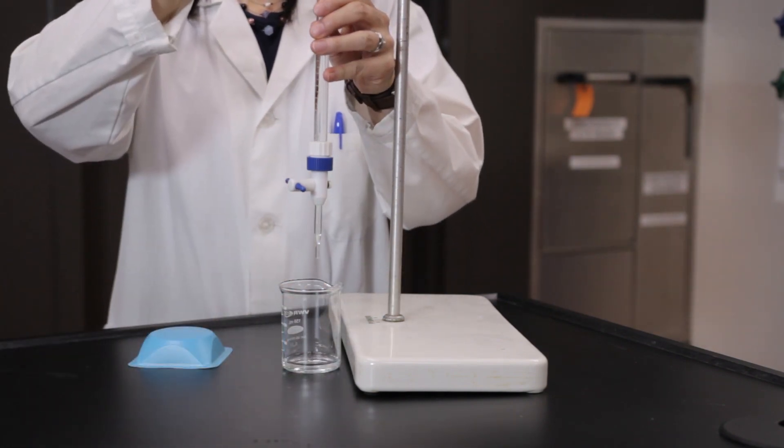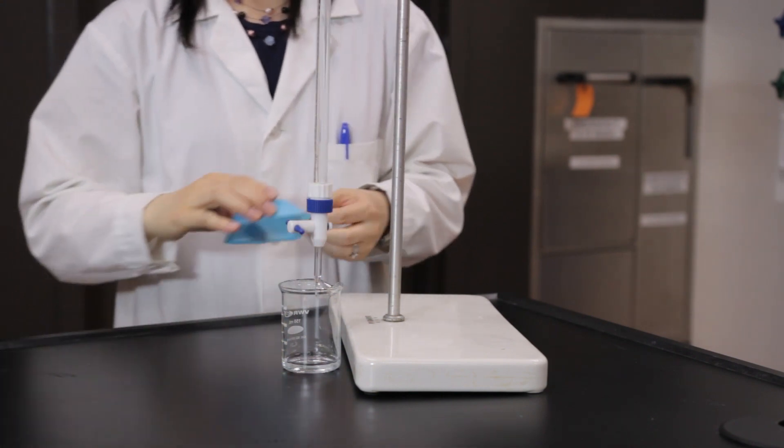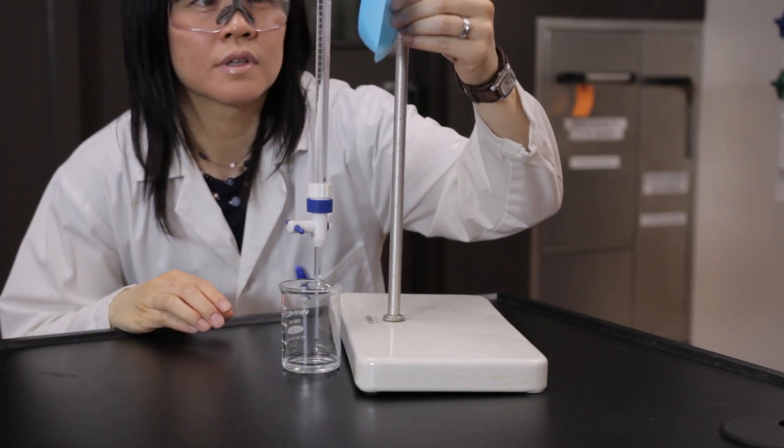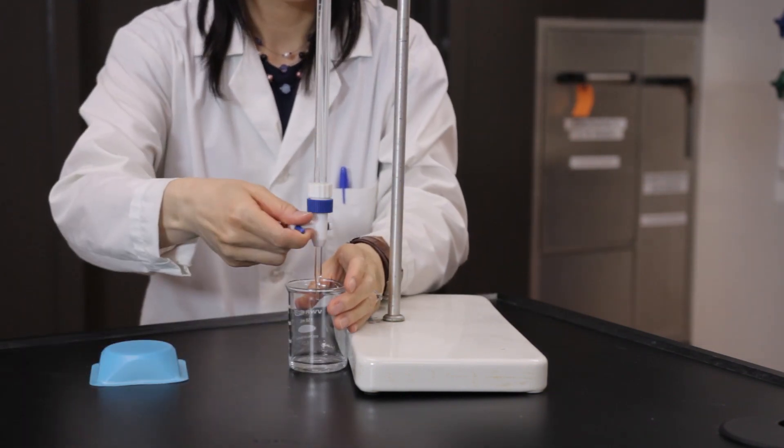Record the concentration of the sodium carbonate located in the burette. Into the same beaker, dispense 10 milliliters of the sodium carbonate solution. Be sure to read the bottom of the meniscus at eye level.